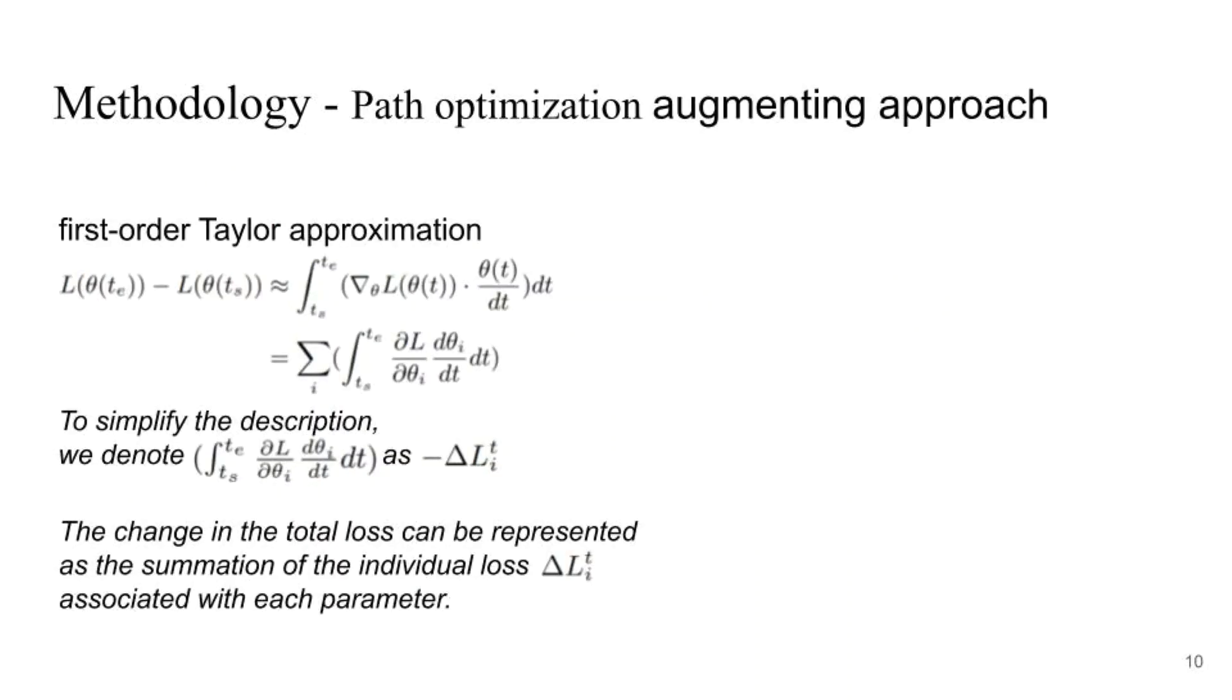Although F_theta is equipped with rationality to avoid catastrophic forgetting, the commonly used curvature-based methods of deriving F_theta rely on point estimation, which only captures local curvature information around theta star. In contrast, the path optimization method consists of the information over the optimization path on the loss surface.